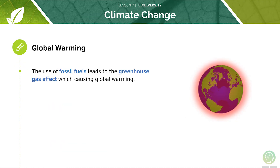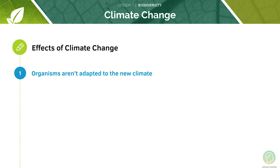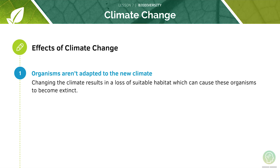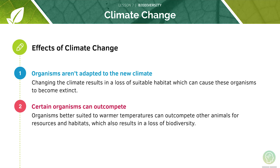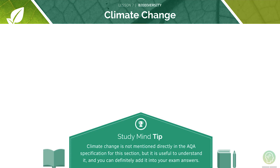The use of fossil fuels leads to the greenhouse gas effect which in turn causes global warming, drastically increasing temperatures on earth. Due to climate change, organisms are not adapted to new conditions, meaning there is a loss of suitable habitat, allowing other organisms to out-compete them and leading to a loss in biodiversity. There can also be an increase in diseases, promoting the proliferation of many disease-causing organisms. Climate change is not mentioned directly in the specification for this section, but it's useful to understand and you can add it into your exam answers.